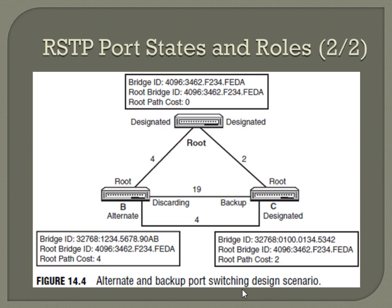Here we've got a switch network of three switches. At the top is the root bridge — looking at the bridge IDs, switches B and C each have a priority of 32768, while this one has a lower value of 4096, making it the designated root bridge. The root ports connect the root bridge to B and C, and the designated ports on the root bridge are anything connected to a switch. Switch C has a backup port to a discarding port on B, and B has an alternate port to get back to the root bridge.